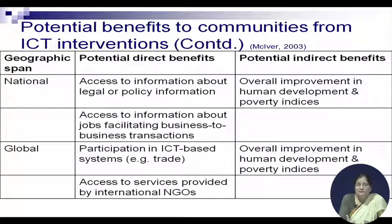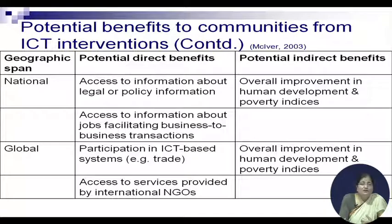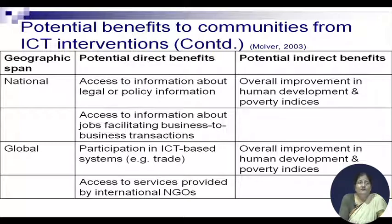Potential indirect national benefits include overall improvement in human development and poverty indices. We help each other, go as a community, offer support, and share resources across state borders — and at the national level this overall improves quality of life in different regions of the country.